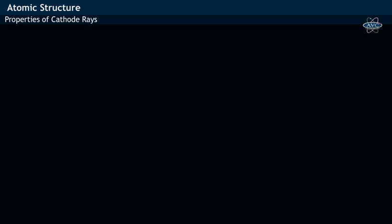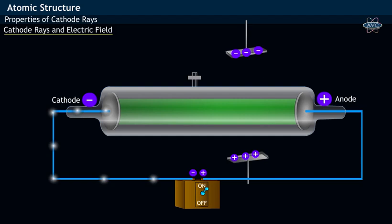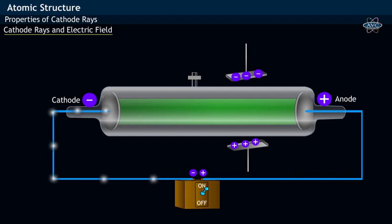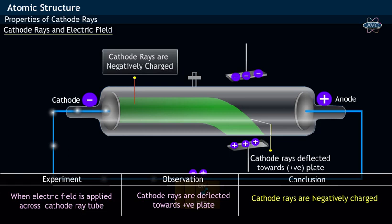Cathode rays and electric field. When an electric field, shown as positive and negatively charged plates, is applied perpendicularly across the path of cathode rays in a cathode ray discharge tube, it was observed that cathode rays are deflected towards the positively charged plate. This attraction clearly indicates that cathode rays are negatively charged.